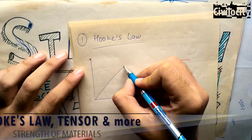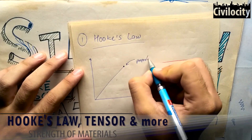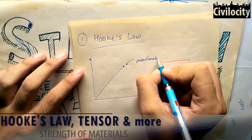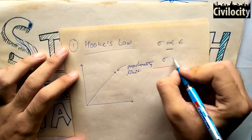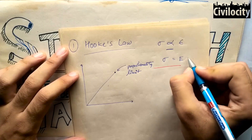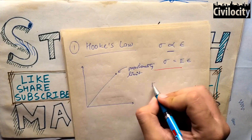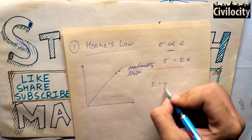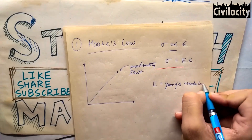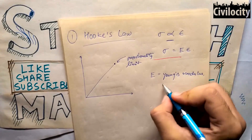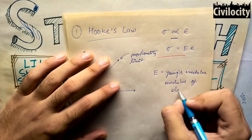So let's first talk about Hooke's Law. Hooke's Law says that stress is directly proportional to strain. For this proportionality, we introduce a constant called modulus of elasticity or Young's modulus. So it can be written as sigma equals Young's modulus E into strain. This law is valid up to the limit of proportionality.